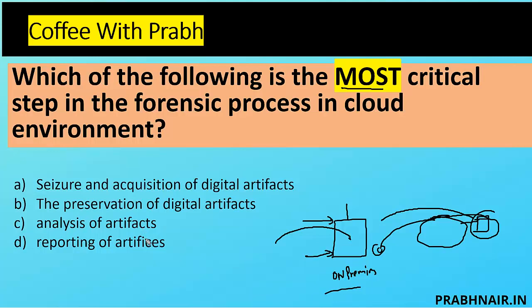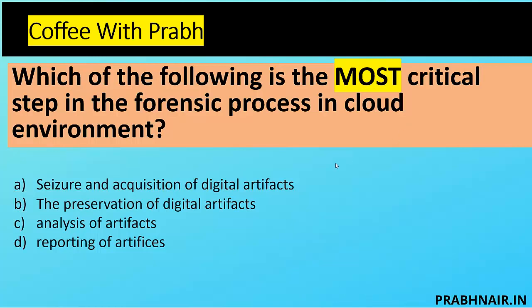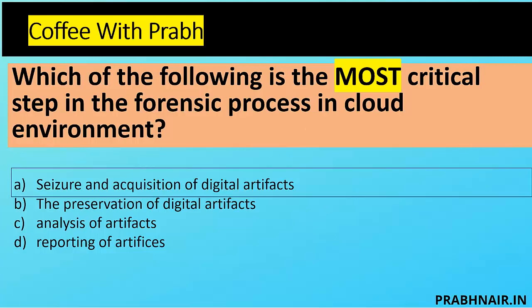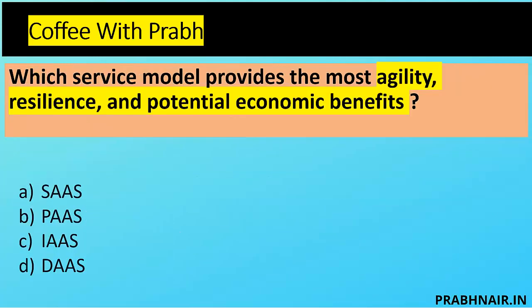Analysis is also a challenge because sometimes lack of skill leads to issues, but with training and good tools we can address this. Reporting of artifacts is also important, but without steps A, B, and C, reporting will be ineffective. The most important step in a forensic investigation is obtaining the evidence. If you fail to obtain complete evidence, you cannot preserve it; if you can't preserve, you can't analyze; and if you can't analyze, you can't report. So the answer is A.